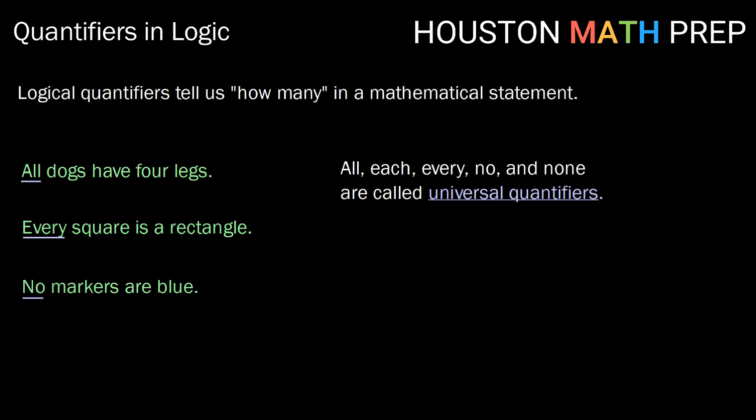Quantifiers like these, all, each, every, no, or none, are a type of quantifier called a universal quantifier. They are all or nothing quantifiers. Sometimes we might see this symbol, which looks like an upside down capital A, and that stands for a universal quantifier. So it stands for each, all, every, etc.